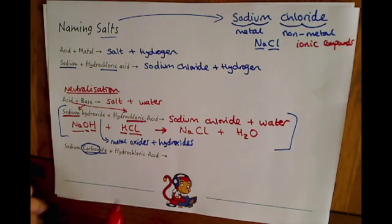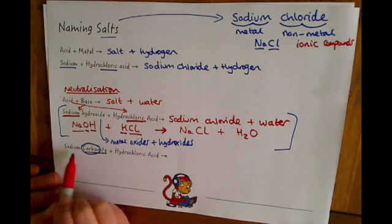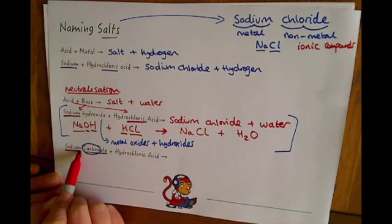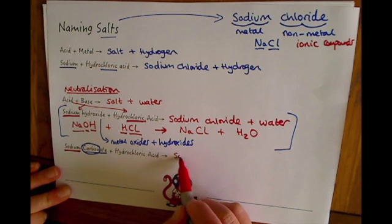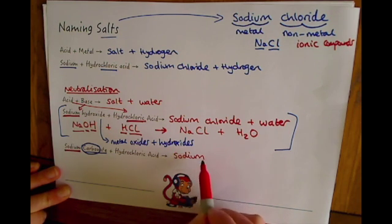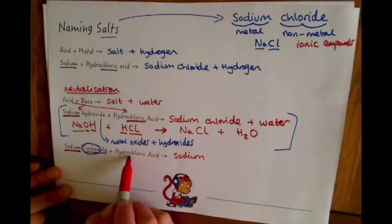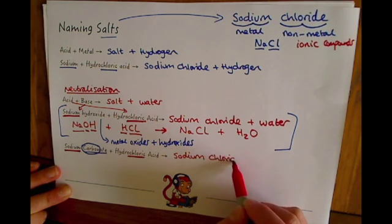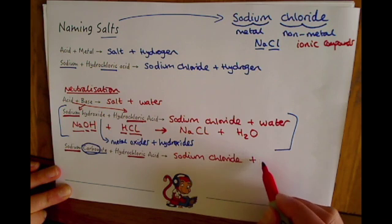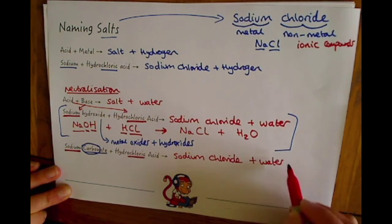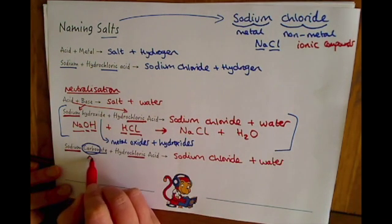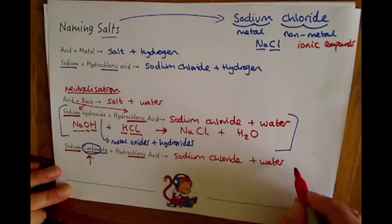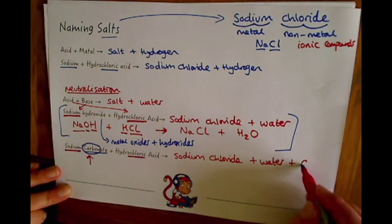So the salt that we're going to make comes from the metal of the base, so sodium, and from the chloride part which we know hydrochloric acids make. So sodium chloride plus water. But in this special case, if it's a carbonate, it will also make carbon dioxide as well.